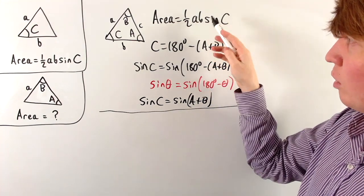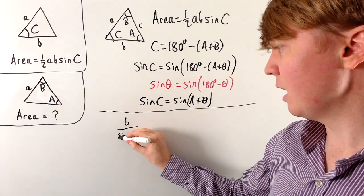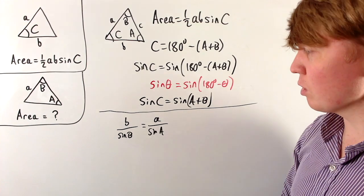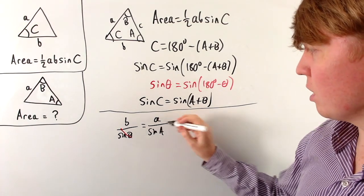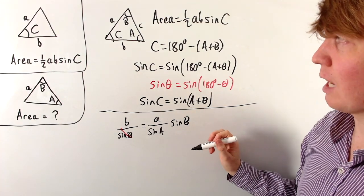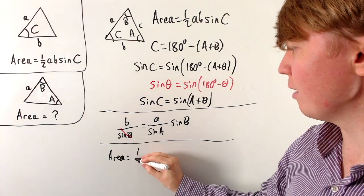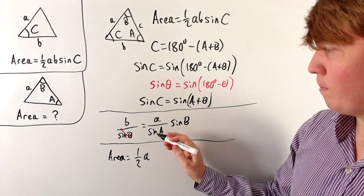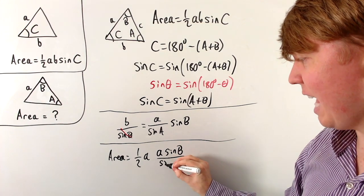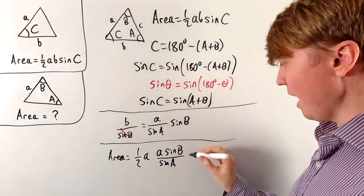Now we just need to find the length lowercase b, and we do this using the sine rule: b over sine B equals a over sine A. Multiplying both sides by sine B, we get b equals a over sine A multiplied by sine B. We can then substitute all of this into our formula, giving us: area equals a half times a times (a sine B over sine A), and finally multiplied by sine(A plus B).